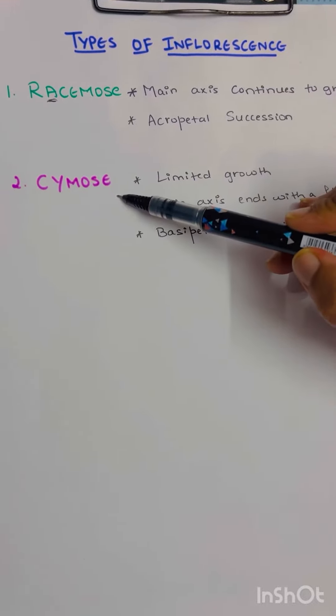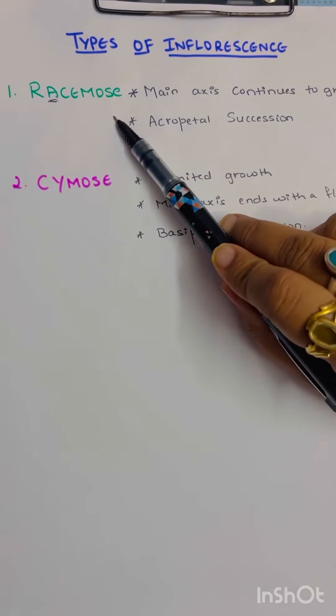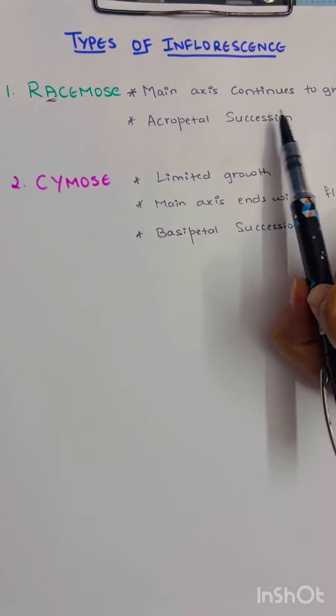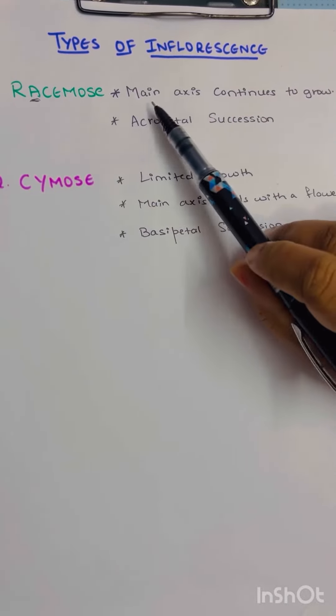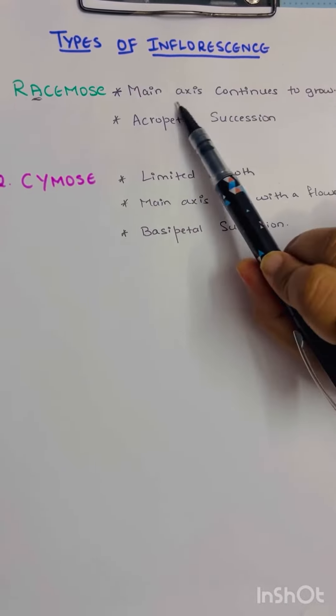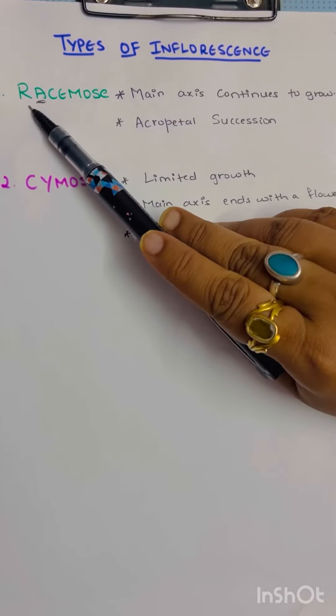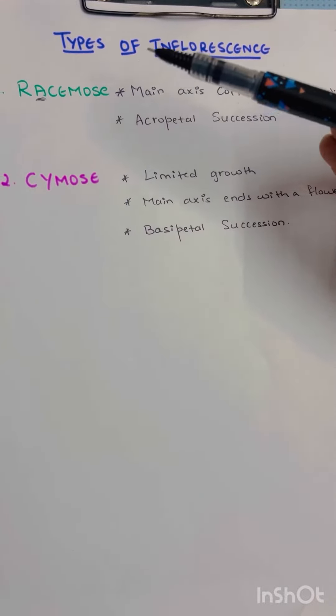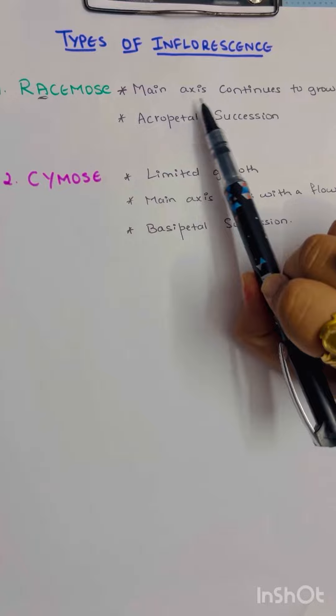Racemose and cymose. Racemose means the main axis continues to grow. How to remember this? You can see a race is always continuous, so here in the plant, the main axis continues to grow.